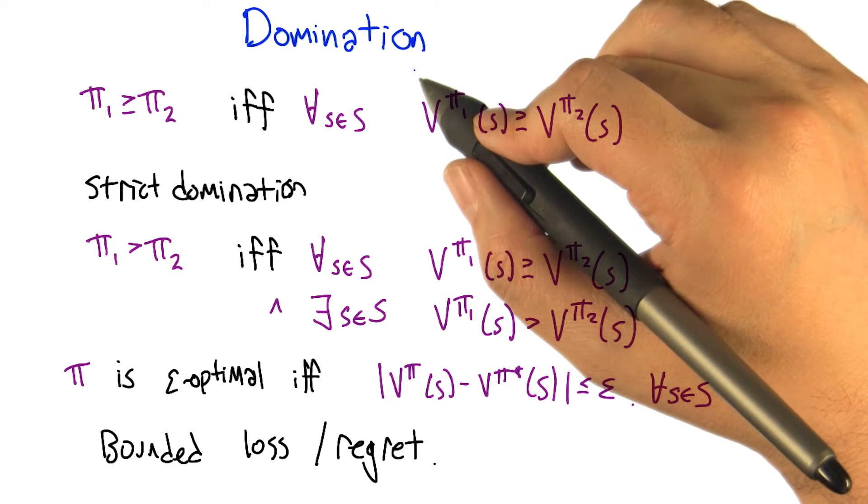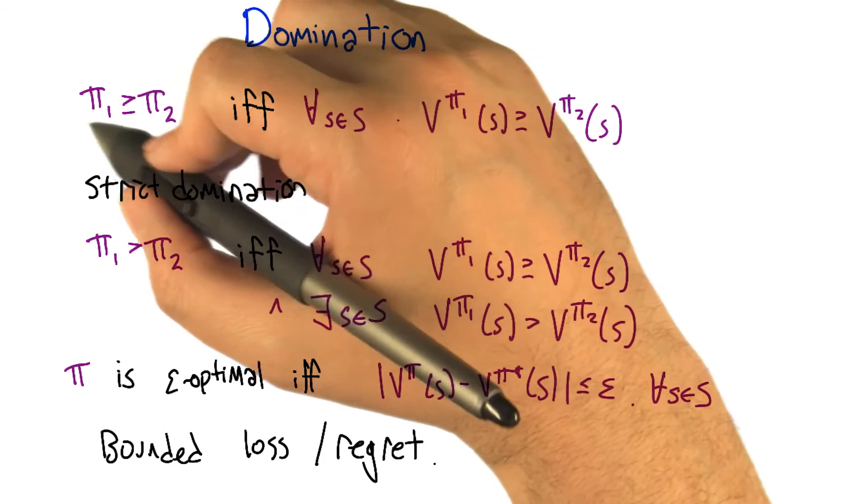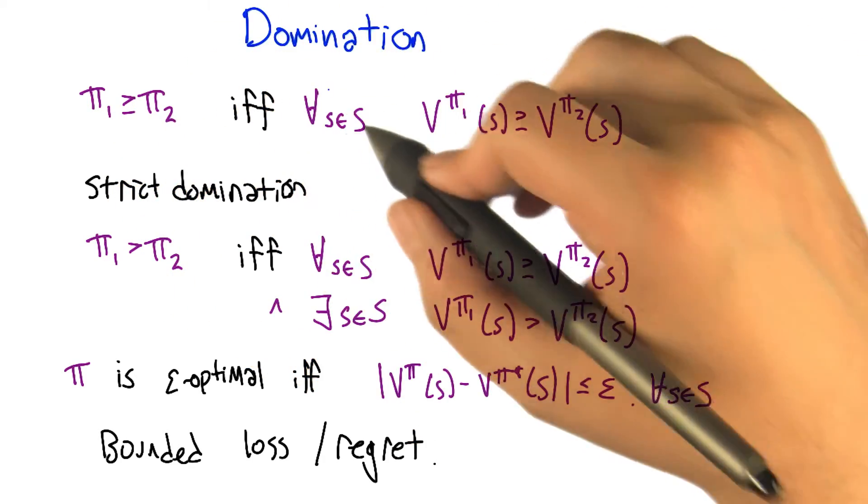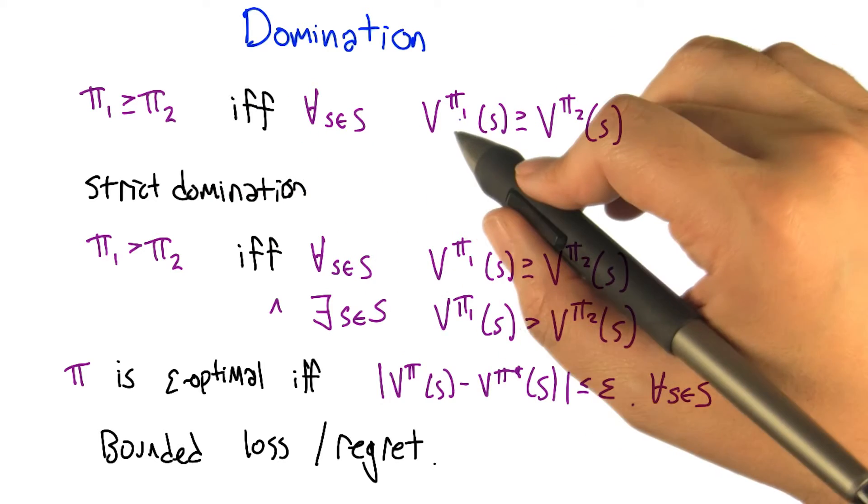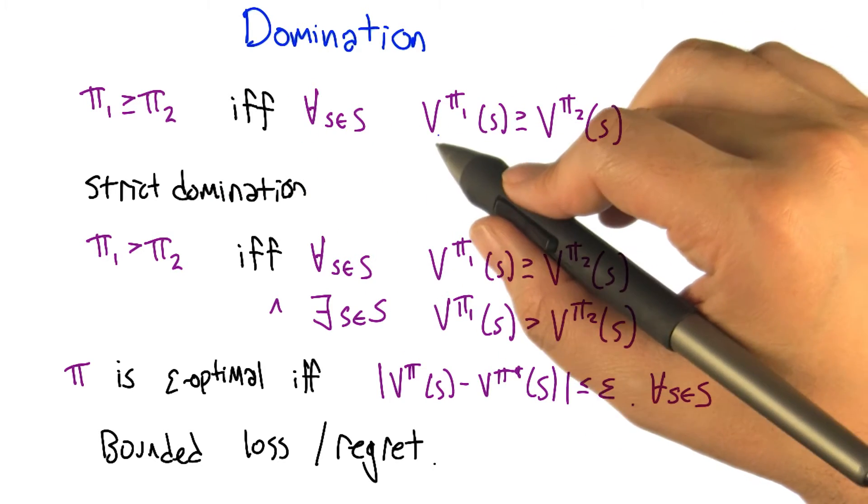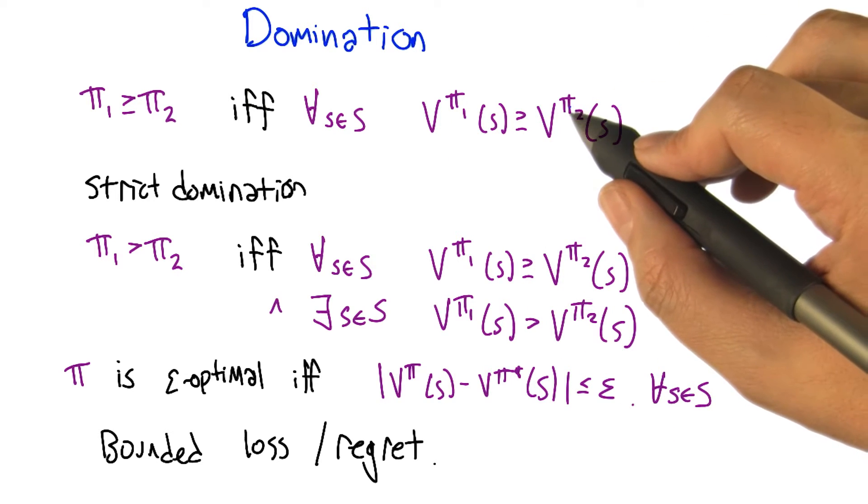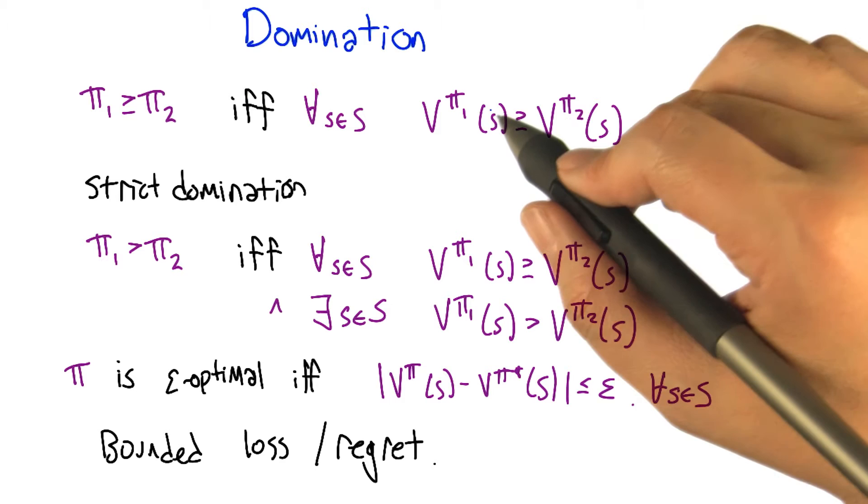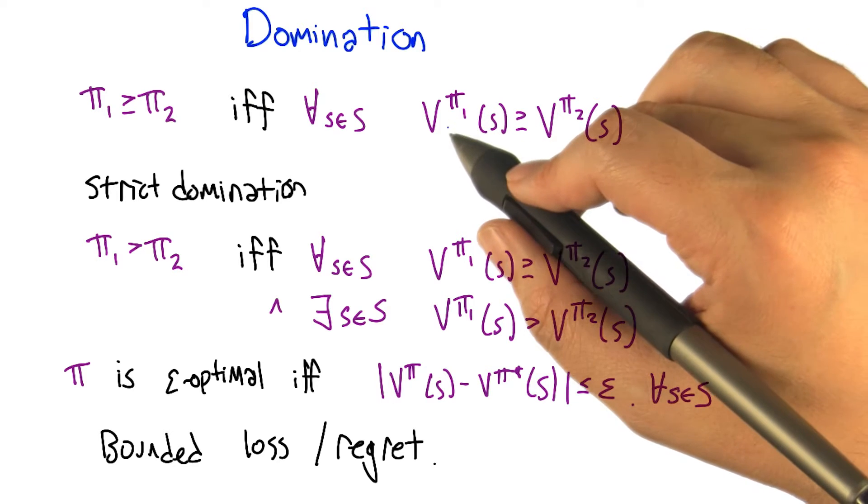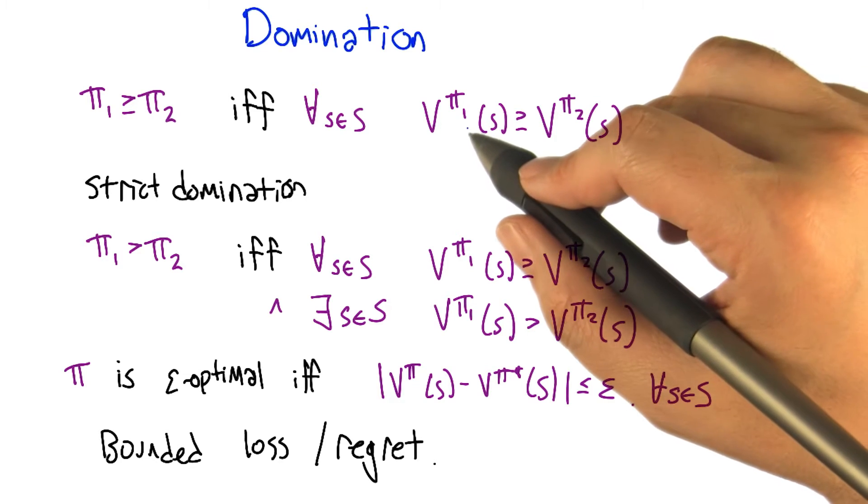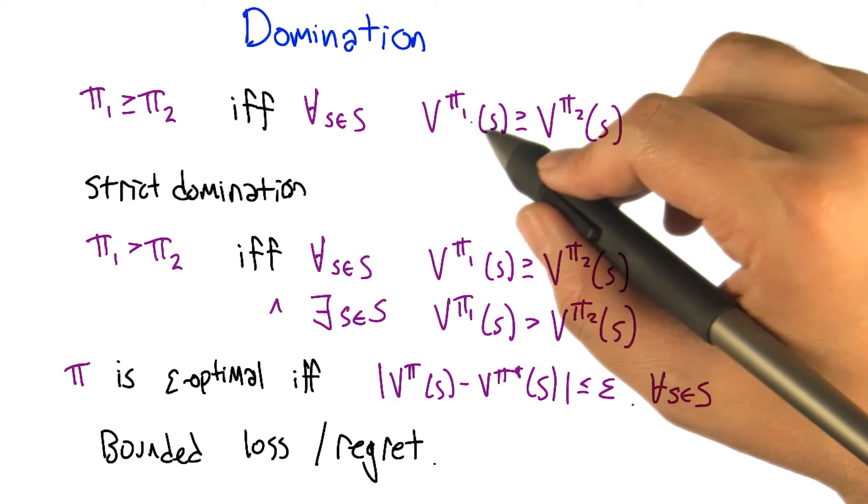So this is what domination means in the context of policies. We're going to say that policy one dominates policy two if it's the case that for all states, the value of that policy at that state for policy one is bigger than or equal to the value of that state for policy two. So it could be that there's some policies where policy one does better in one state and policy two does better in another state, but if it dominates it, policy one has to do no worse in any state.